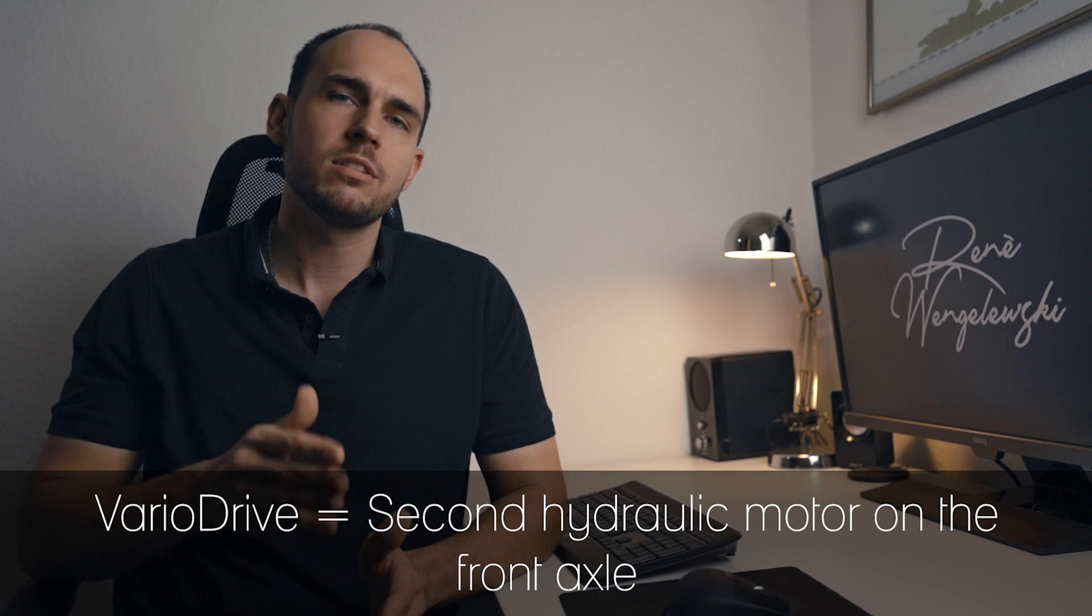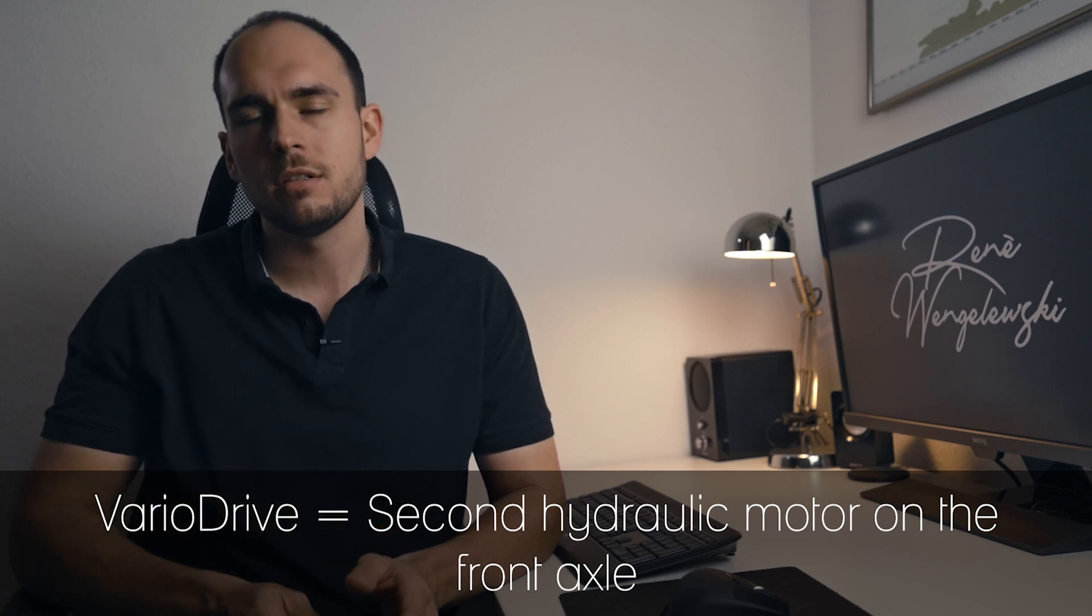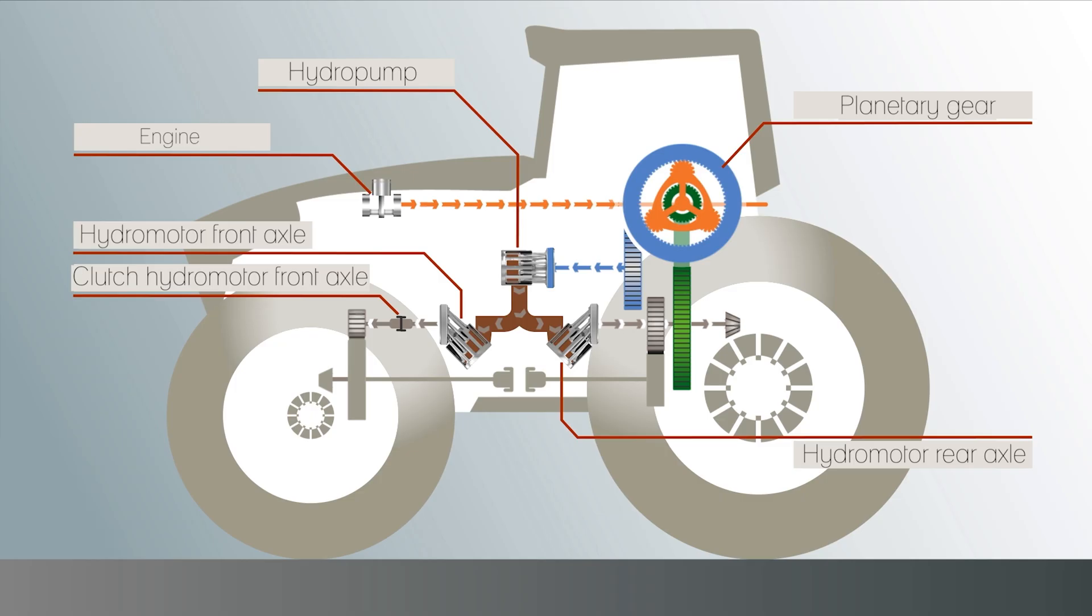Here Variadrive means that there is a second hydraulic motor for the front axle and both are fed by the familiar hydraulic pump. The special feature, I have a variable all-wheel drive due to the independent drive of the axles. As a result the button for the all-wheel clutch in the armrest is no longer needed in the series as you might notice.